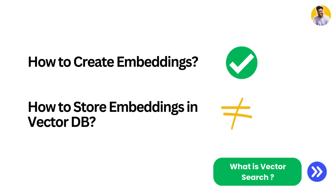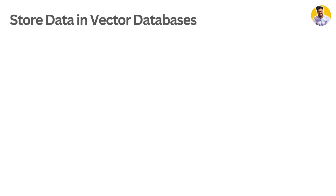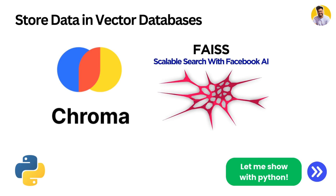Now let's learn how to store those embeddings in a vector database. Vector databases such as ChromaDB, Weaviate, Pinecone, or FAISS are specialized databases designed to store and search vector representations of data. After generating the embeddings of text, image, or audio, you can store them in the vector database and use it to find similar context for your prompts and queries. We'll use ChromaDB and FAISS to store these embeddings.